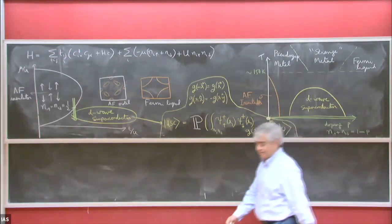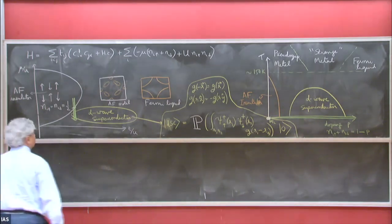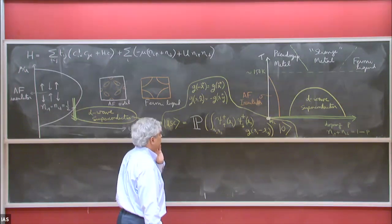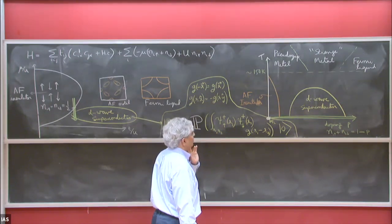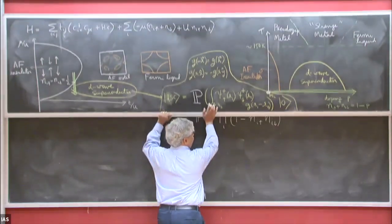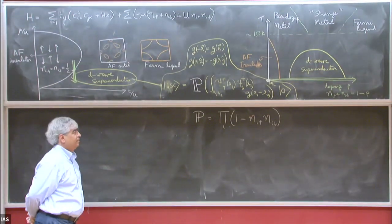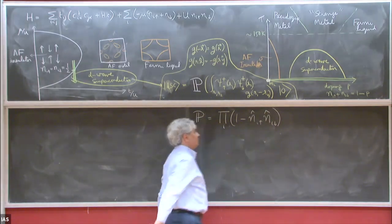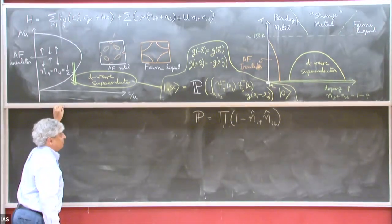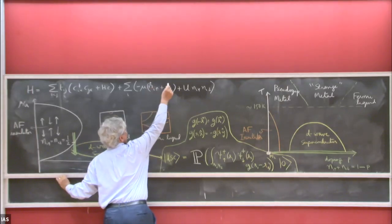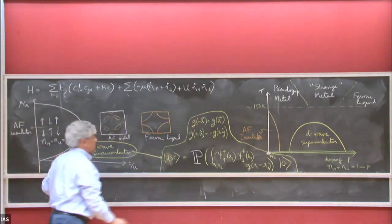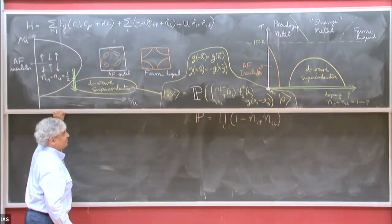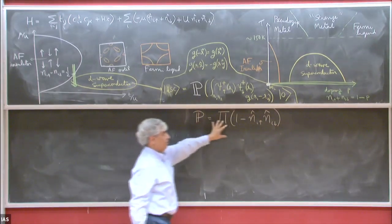A question arose about the projection operator P: it should be written as a product over sites i. The n_i in P is an operator — with a hat — while the other n values appearing elsewhere are expectation values without hats. This is a very complicated operator.